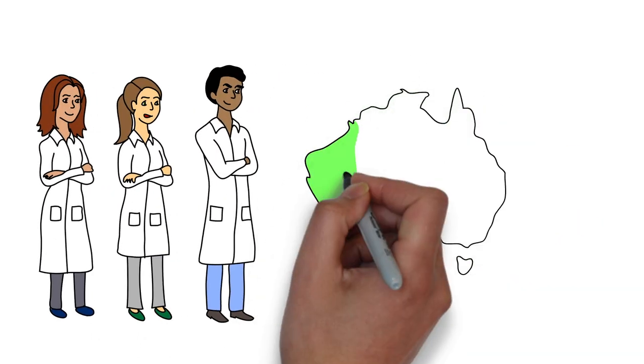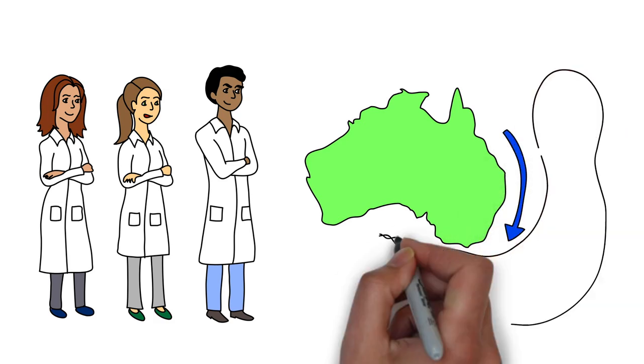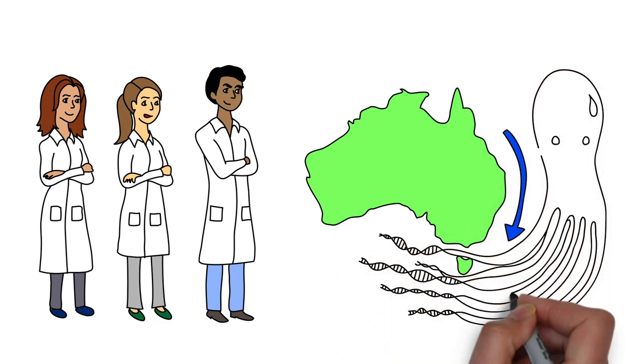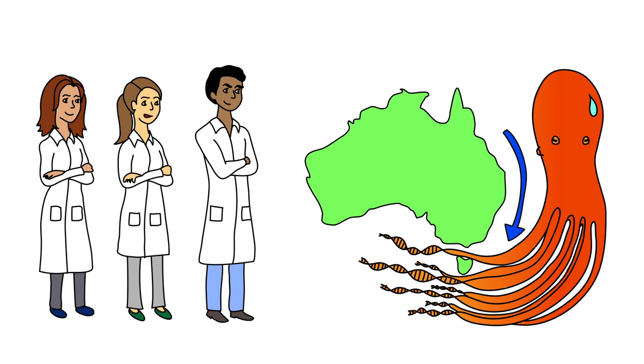The researchers use the East Australian Current as their living laboratory, where they investigated the genetic fingerprint of a certain species of octopus shifting south.